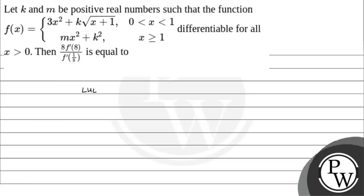So I am computing the left-hand limit, that is limit x tends to 1⁻ of f(x). For this value, we use the first equation. If we put the limit in this equation, we substitute x = 1, so that will be equal to 3(1)² + k√(1+1). Upon solving this, we have 3 + k√2. So our left-hand limit is obtained.